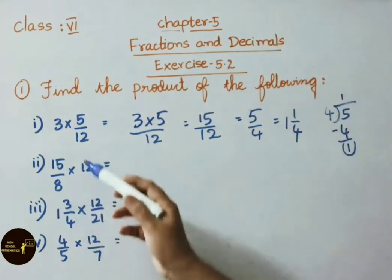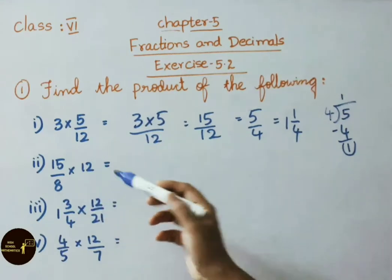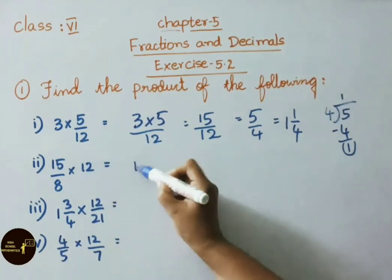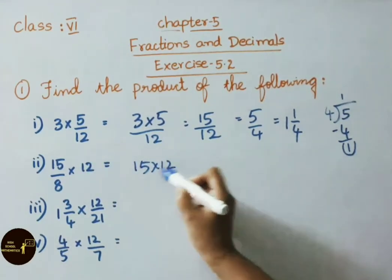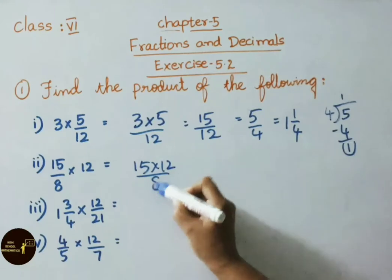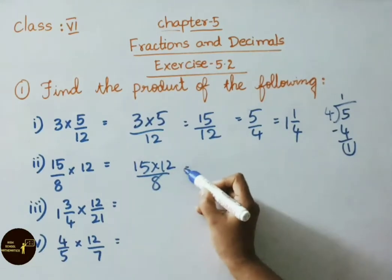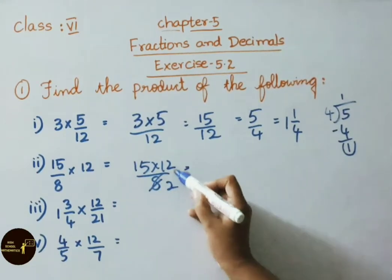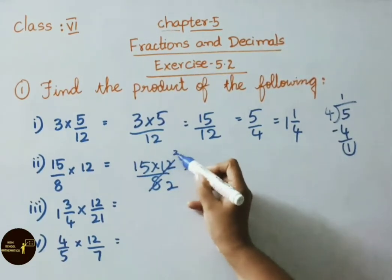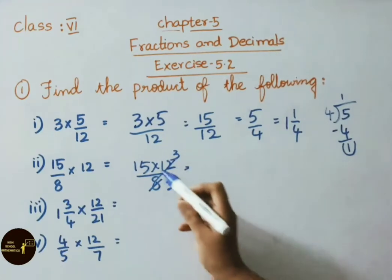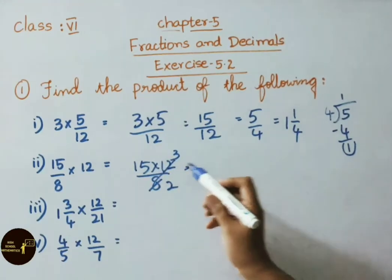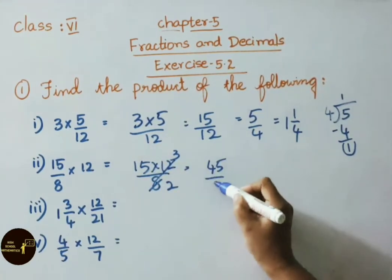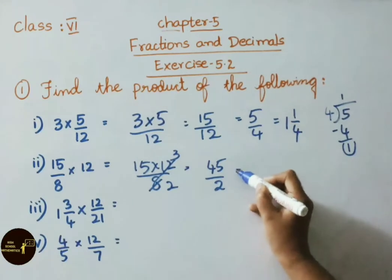The second sum is 15 by 8 into 12. First, multiply the numerators: 15 into 12 by 8. Using the 4 times table, 4 twos are 8 and 4 threes are 12. Now multiplying the numerators: 15 into 3 gives 45 by 2.